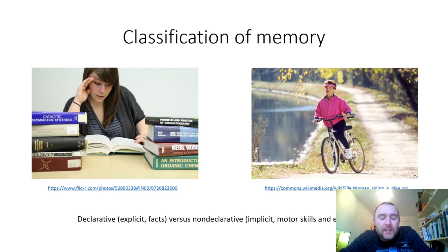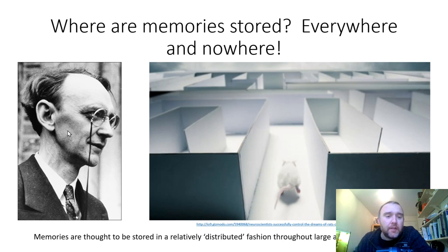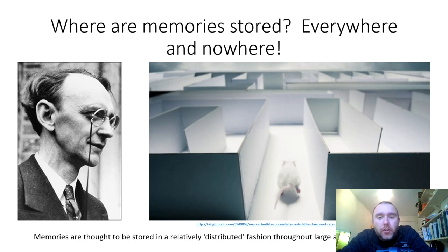These two types of memory tend to be stored in different regions of the brain, and therefore can be differentially affected by different types of brain damage. The guy on the left-hand side of this figure is Carl Lashley, an American physiologist in the early 20th century, who was very interested in whereabouts in the nervous system memories are stored. He did a rather grisly experiment.